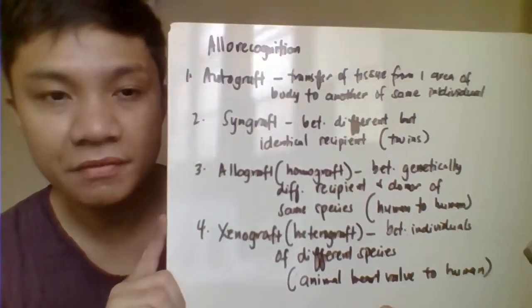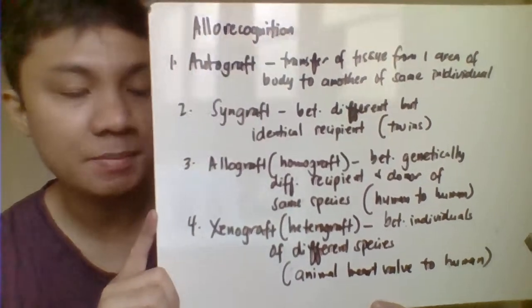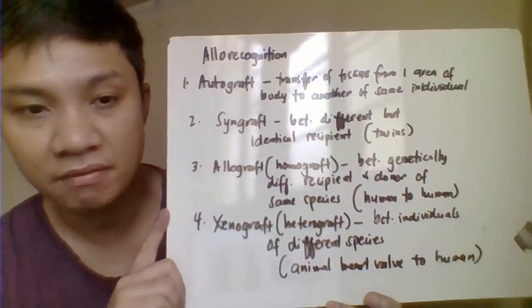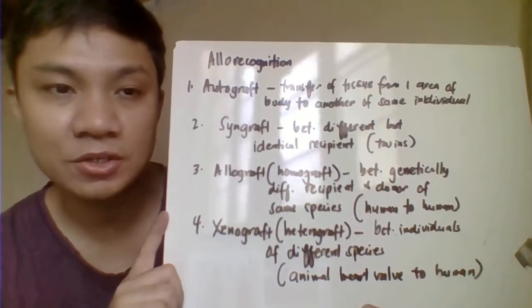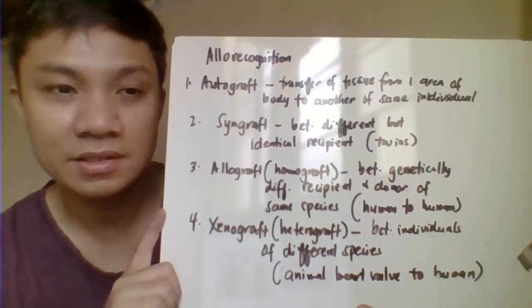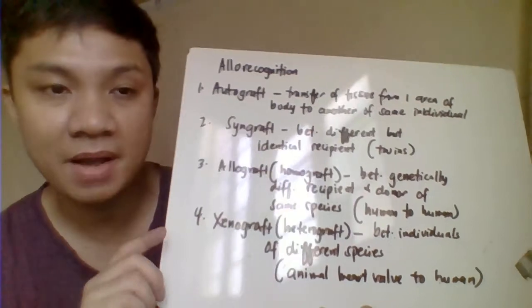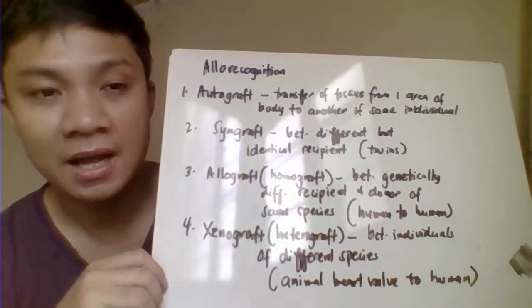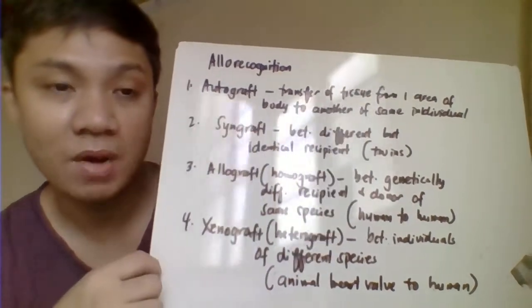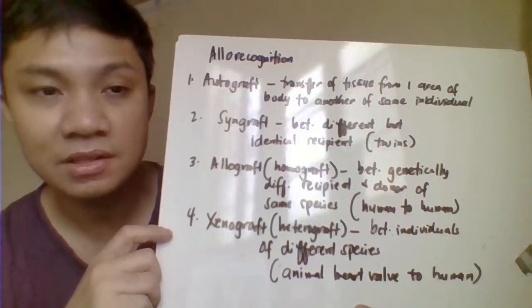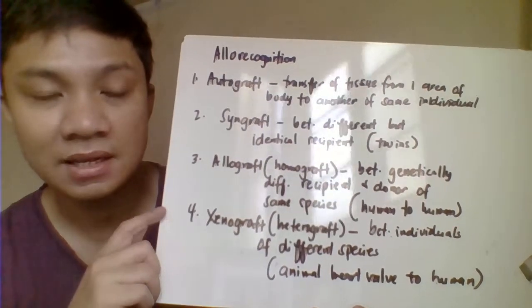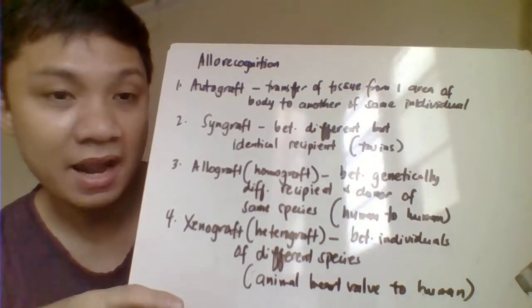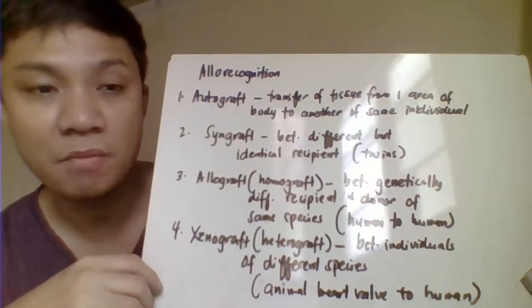There are different types of transplantation. The first is the autograft, which is the transplantation where you transfer tissue from one part of your own body to another part of the same individual. Examples include skin, hair, or bone.